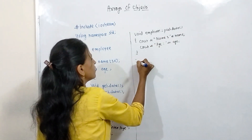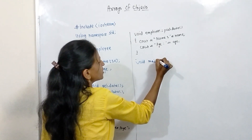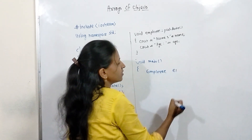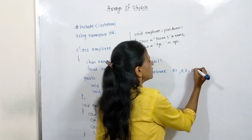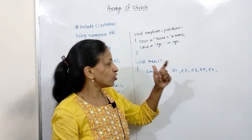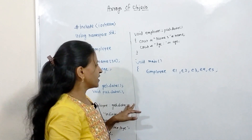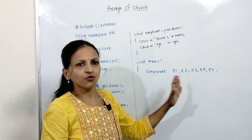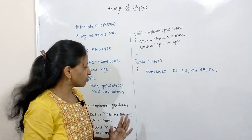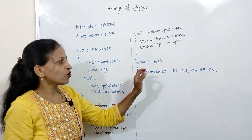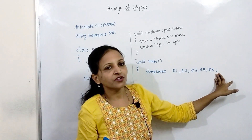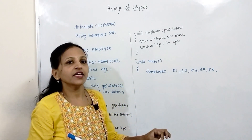It is better to use an array instead of creating 5 different objects, as that is easier to handle. Creating individual objects like e1, e2, e3, e4, e5 and calling e1.getData, e2.getData, e3.getData, e4.getData separately becomes very hard to manage as the number increases. That's why if you know the array of objects concept, you can easily handle all objects of that class — calling member functions for all objects will be very easy.